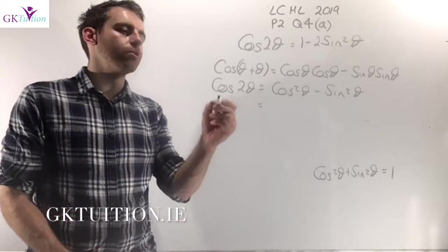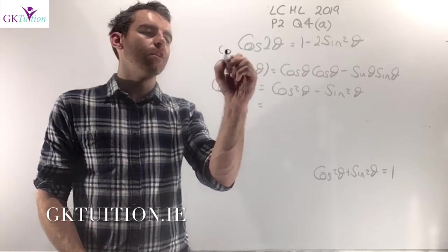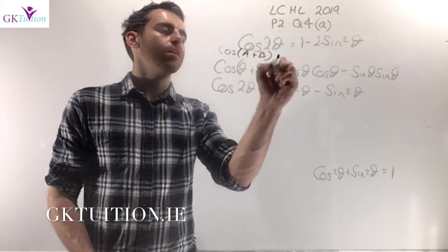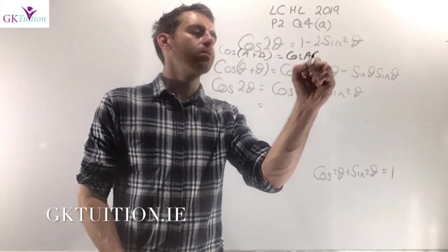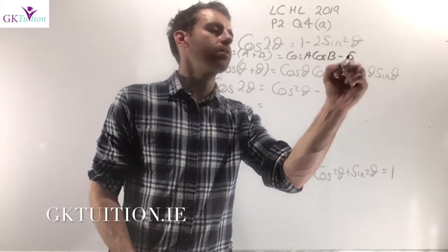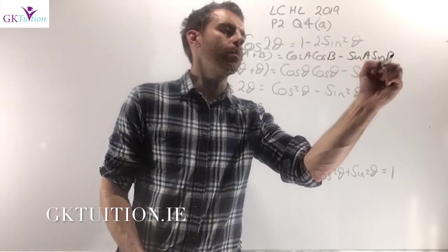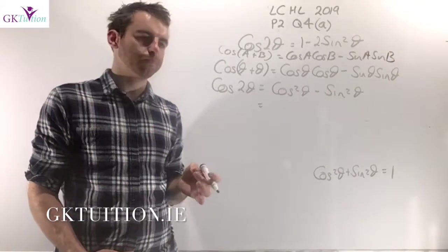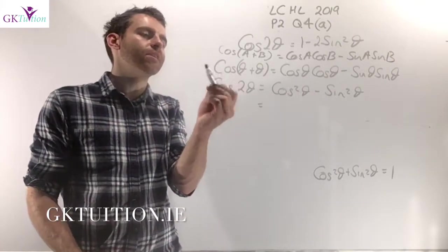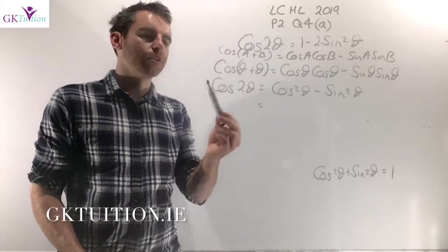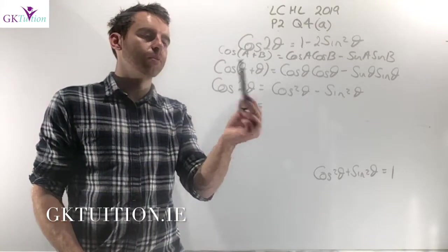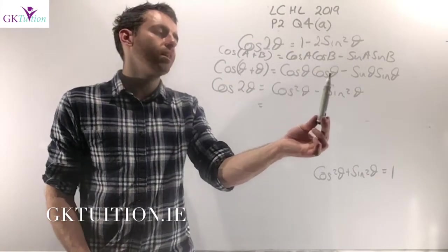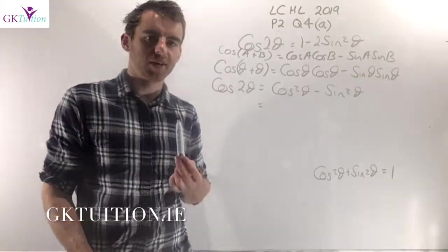The first thing you should do here is go to the formula in your log tables that says that cos(a + b) is equal to cos(a) times cos(b) minus sin(a) times sin(b). That's the first formula we're going to use. I'm going to use it except instead of using cos(a + b) I'm going to use cos(theta + theta), so the right hand side becomes cos(theta)cos(theta) minus sin(theta)sin(theta).